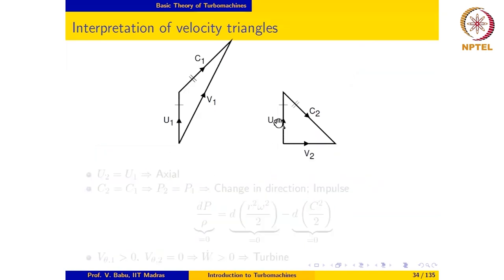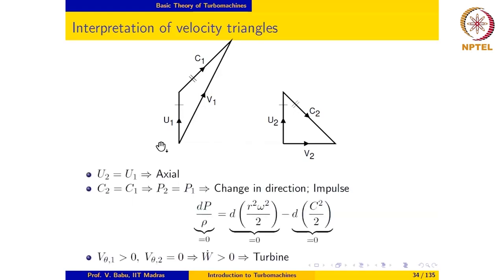Looking at this velocity triangle, it is indicated that U1 is equal to U2, and furthermore it is also indicated that C1 is equal to C2. U2 equal to U1 implies that it is an axial machine. C2 equal to C1, combined with DR being 0 for an axial machine, means DC is also equal to 0, so DP is equal to 0 for this rotor. This means that the pressure remains constant and there is only a change in direction of the fluid — so it is an impulse machine.